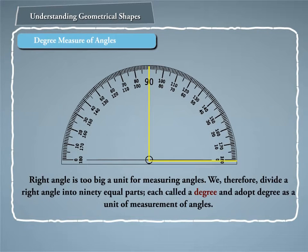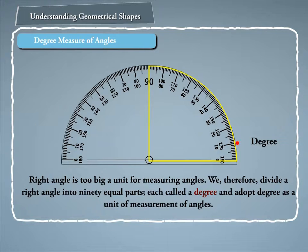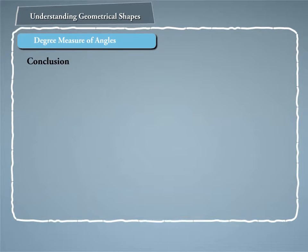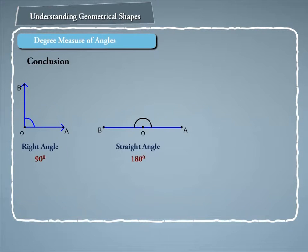A right angle is too big a unit for measuring angles. We therefore divide a right angle into 90 equal parts, each called a degree, and adopt degree as a unit of measurement of angles. Degree is denoted by the symbol written at the top of the numeral. Thus, 20 degrees is written as 20°. We conclude: one right angle equals 90°, one straight angle equals 180°, one complete angle equals 360°.